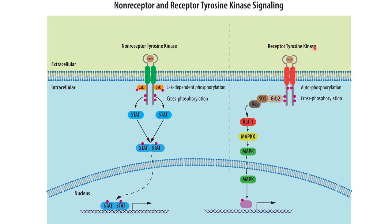Conversely, receptor tyrosine kinases also have two monomers that form a dimer upon ligand binding, which causes autophosphorylation of the monomers and cross-phosphorylation that activates the GRB2-RAS-RAF-MAP kinase pathway. The RAS, RAF, and MAP kinase steps are classically represented on exam questions. The MAP kinase then migrates into the nucleus, activates transcription factors, which bind DNA and promote transcription.